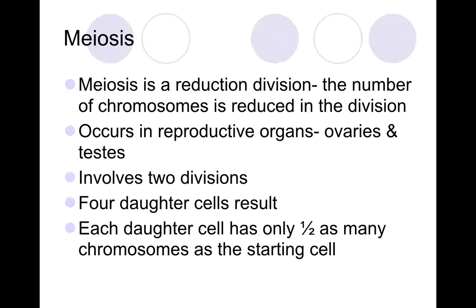Meiosis is what I like to call a reduction division — the number of chromosomes is reduced throughout this process. My end product is four daughter cells that only have half as many chromosomes and are genetically different from what we started with. It occurs in our reproductive organs — ovaries and testes — and it involves two divisions, with all the steps in meiosis one and meiosis two to complete the process.